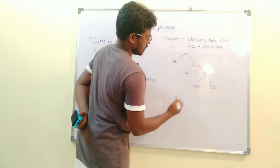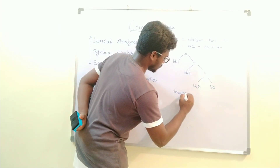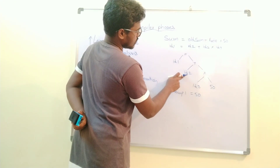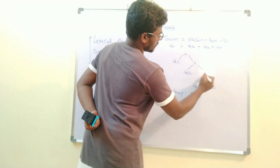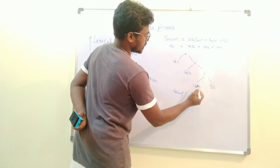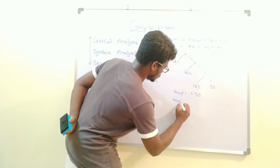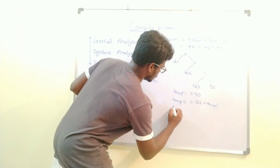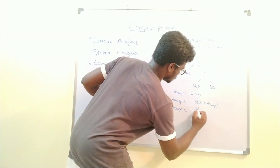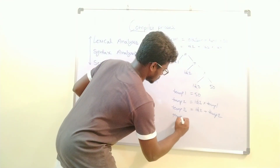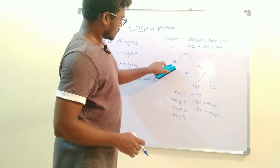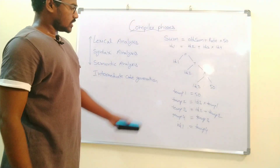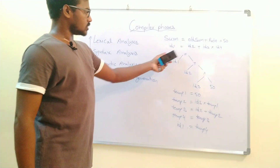In intermediate code generation, for example, we take a temporary variable: temp1 = 50. Then we compute id3 multiplied by 50 (which is temp1) to get temp2. So temp2 is a temporary value. This is the intermediate code we get based on the syntax tree.